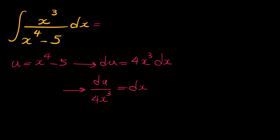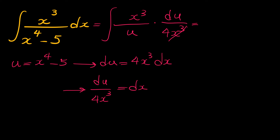Now we do the substitution. We leave x cubed in the top; x⁴ minus 5 is u, and dx is du over 4x cubed. If we cancel x³ with x³, then we have one fourth integral of du over u.